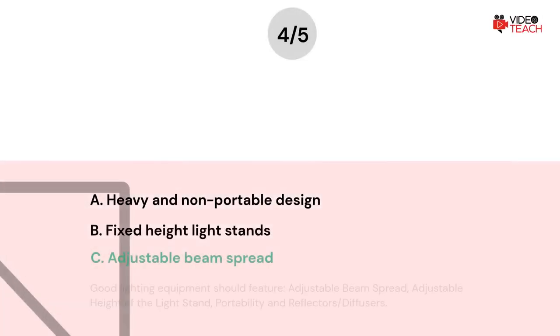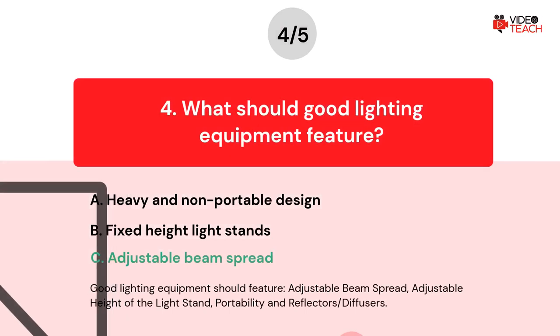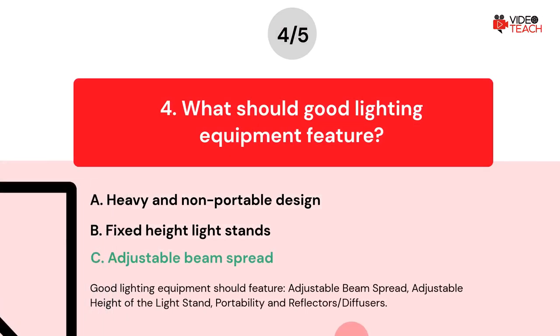The correct answer is C. Good lighting equipment should feature adjustable beam spread, adjustable height of the light stand, portability, and reflectors or diffusers.